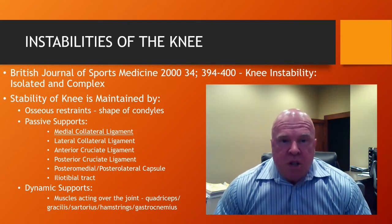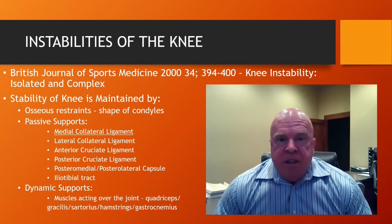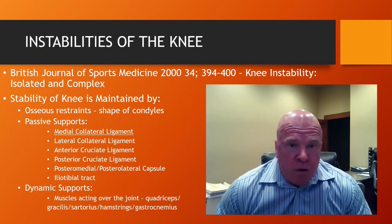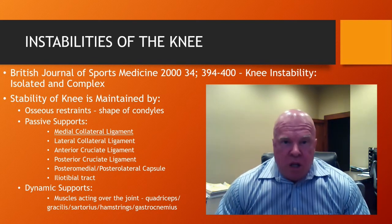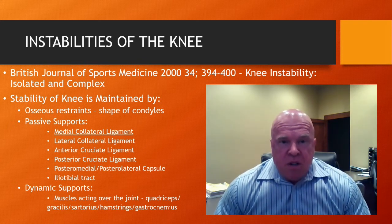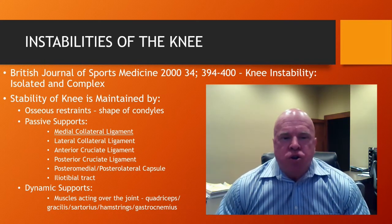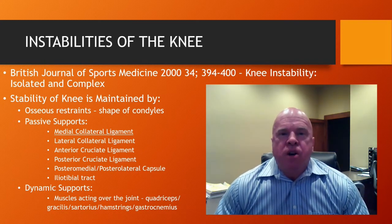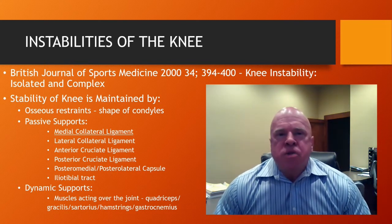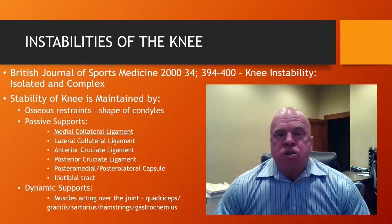In follow-up sessions to today's discussion, we're going to investigate the other ligaments that contribute to the stability of the knee, including the lateral collateral ligament, the anterior cruciate ligament, and the posterior cruciate ligament. Today's reference consists of a classic study reported in the British Journal of Sports Medicine in 2000, wherein they talked about isolated ligamentous injuries and complex — meaning multiple ligamentous injuries that occur simultaneously.